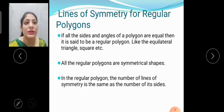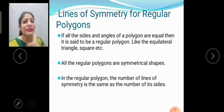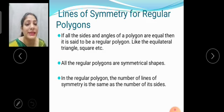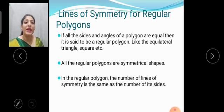Line of symmetry for regular polygon. If all the sides and angles of a polygon are equal, then it is said to be regular polygon. Like a quadrilateral, equilateral triangle, square, etc. All the regular polygons are symmetrical shapes. In a regular polygon, the number of lines of symmetry is the same as the number of its sides.